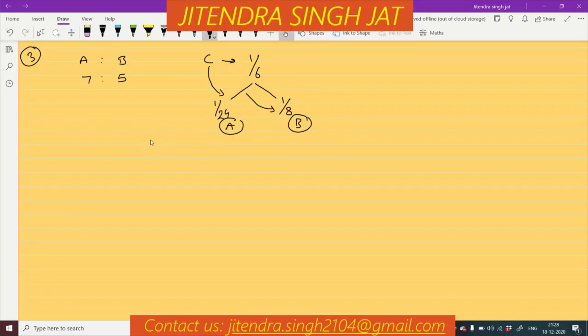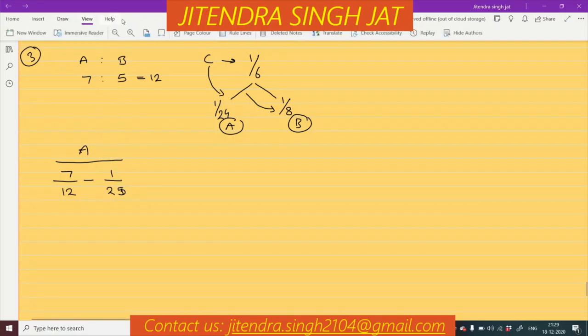So we need to calculate the new profit sharing ratio. What is A's existing share? 7 plus 5 is 12, so A's existing share is 7/12. A is giving 1/24 to C. Whatever A is sacrificing is to be subtracted.